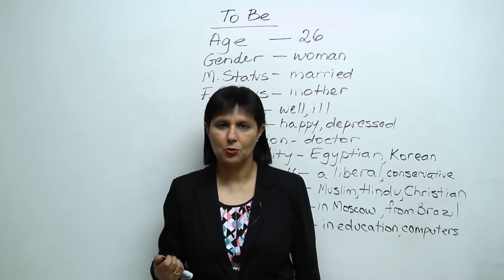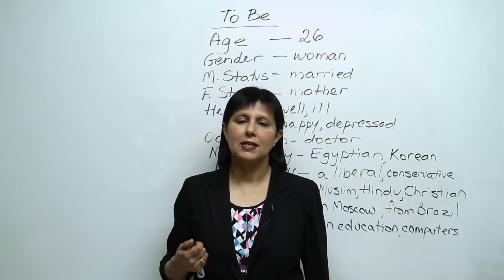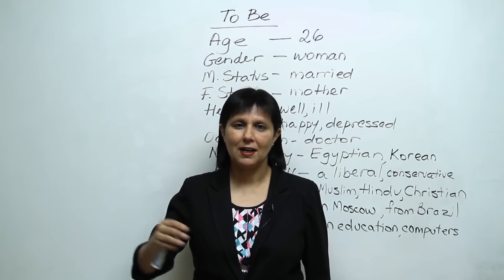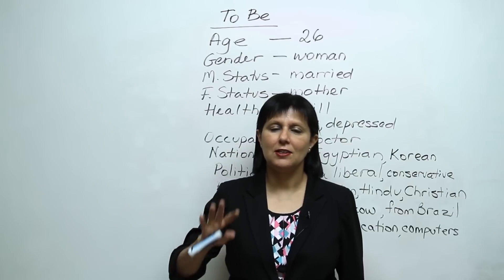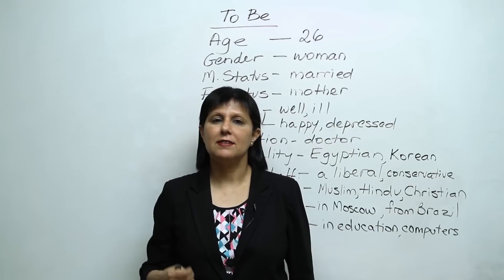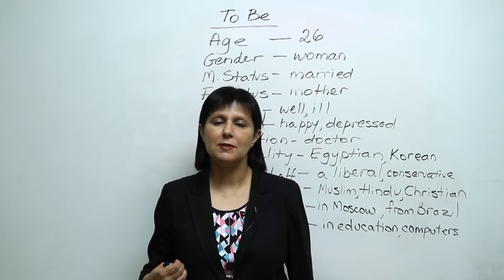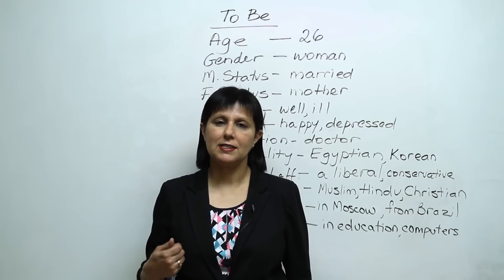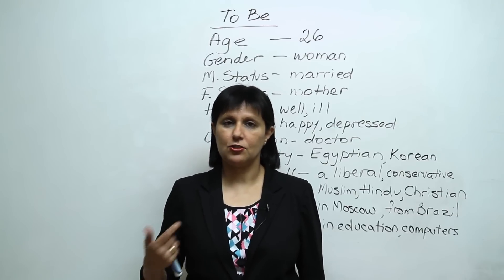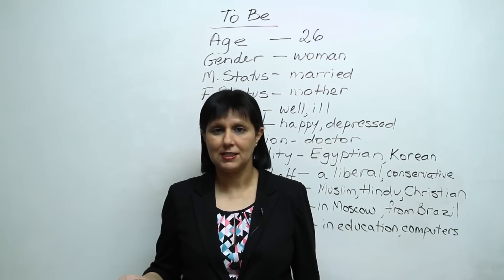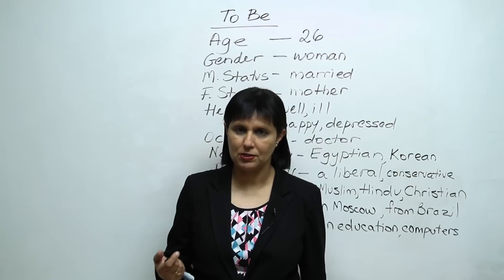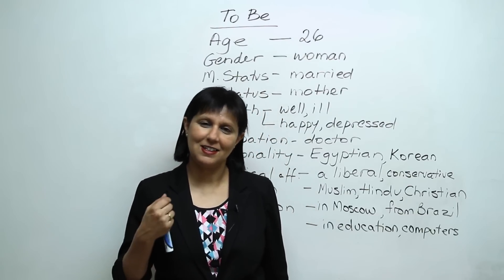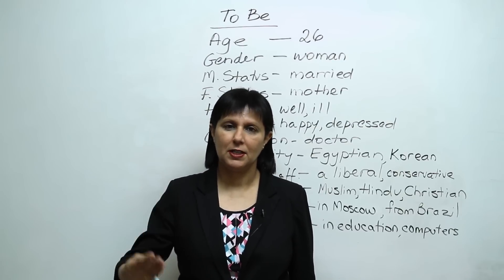Now, why is the verb 'to be' so difficult? Well, first of all, because the verb 'to be' is different from all other verbs in the English language — there's the verb 'to be,' and then there are all the other verbs in English. The second reason is that in many languages, we don't use the verb 'to be,' especially in the present tense. That's why sometimes students say things like 'I student' or 'I happy,' which are incorrect — what's missing is the verb 'to be.' They should say 'I am a student' or 'I am happy.'